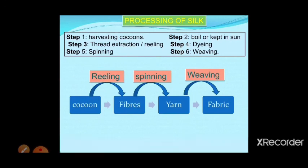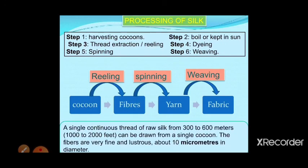A single continuous thread of raw silk from 300 to 900 meters can be drawn from a single cocoon. From one cocoon, a single thread of 300 to 600 meters can be obtained without any joins. This shows how long and fine the silk fiber is.